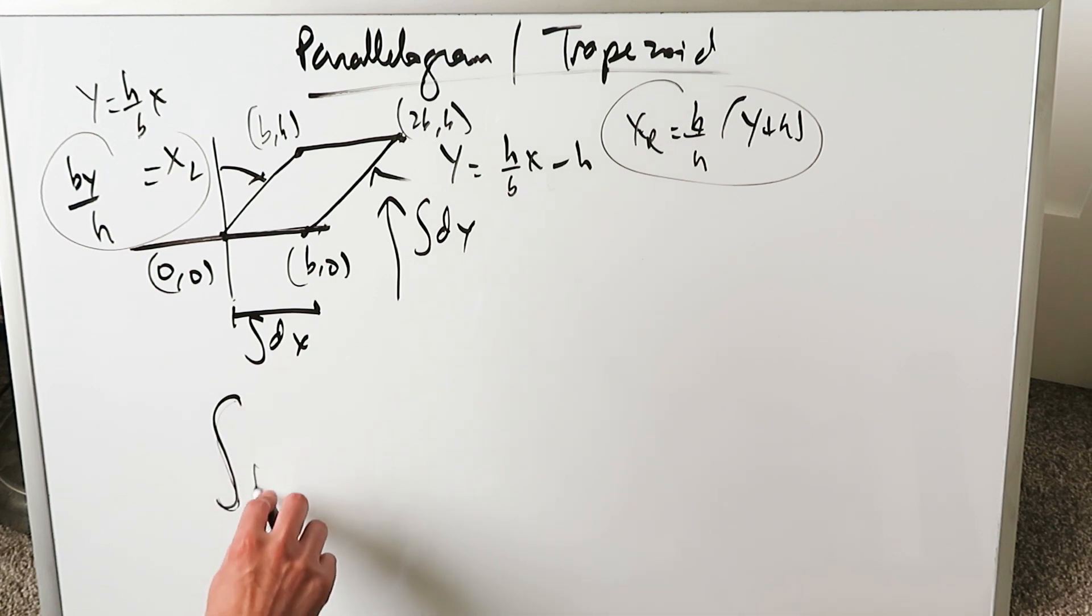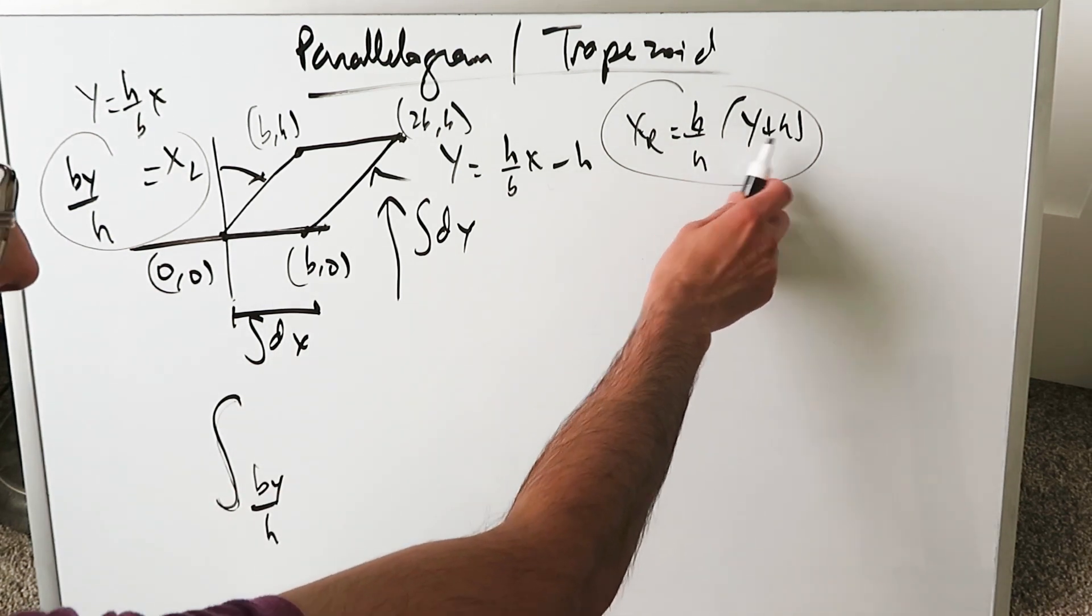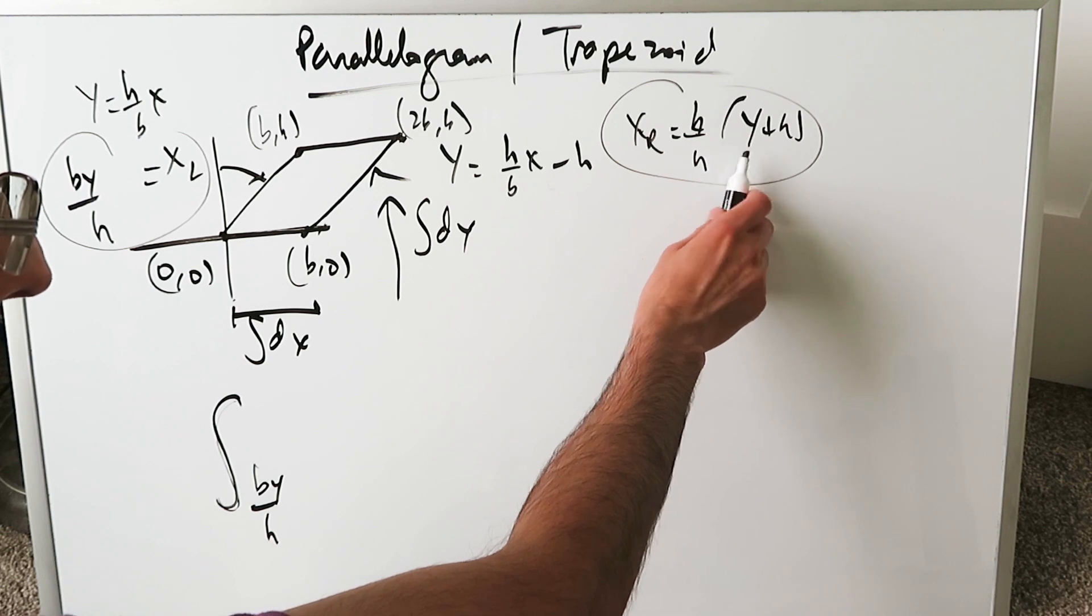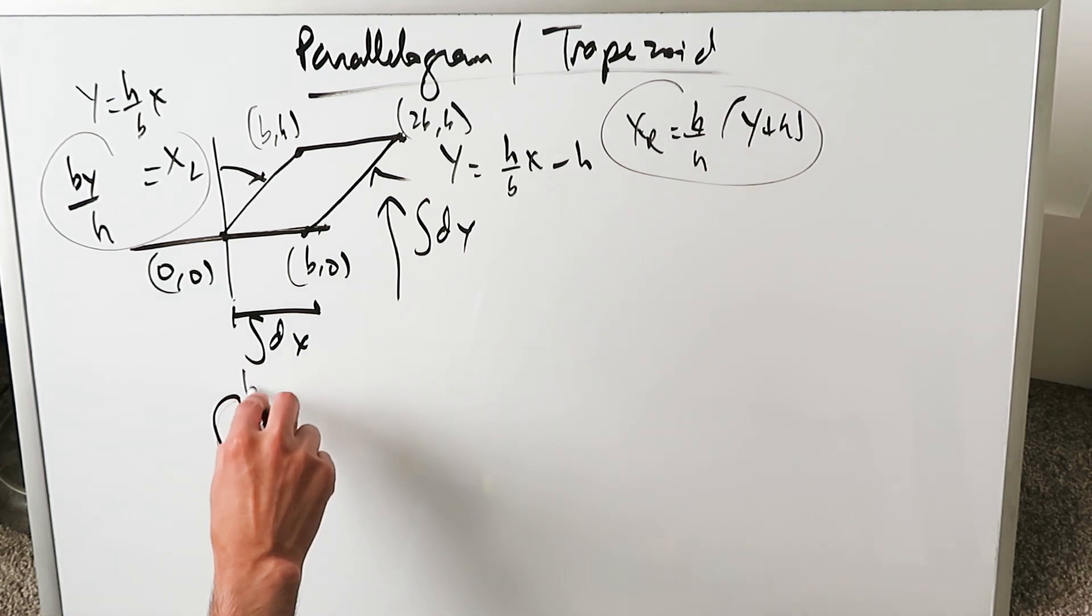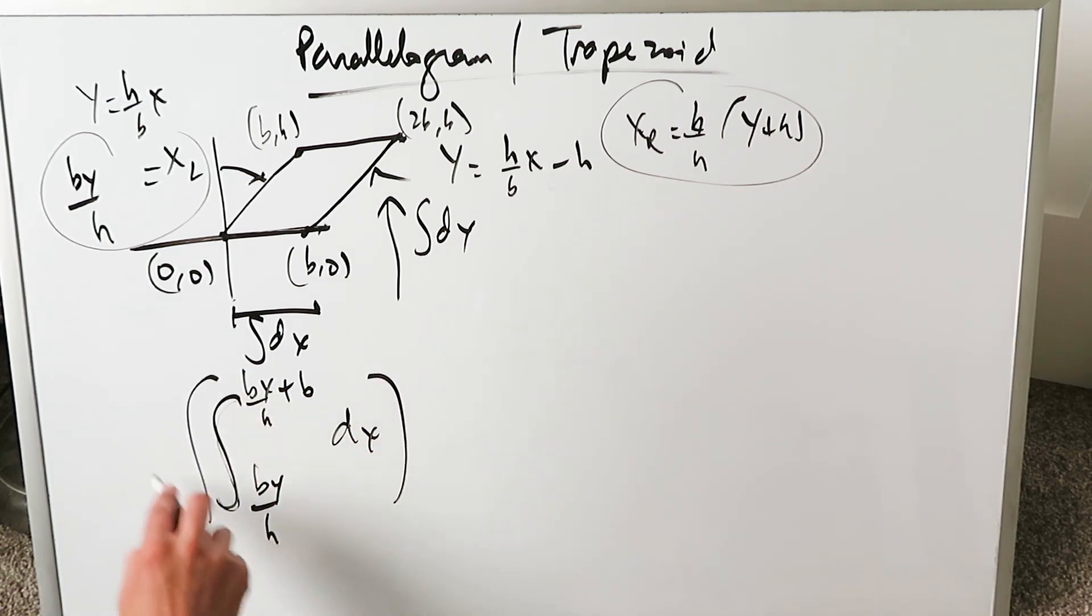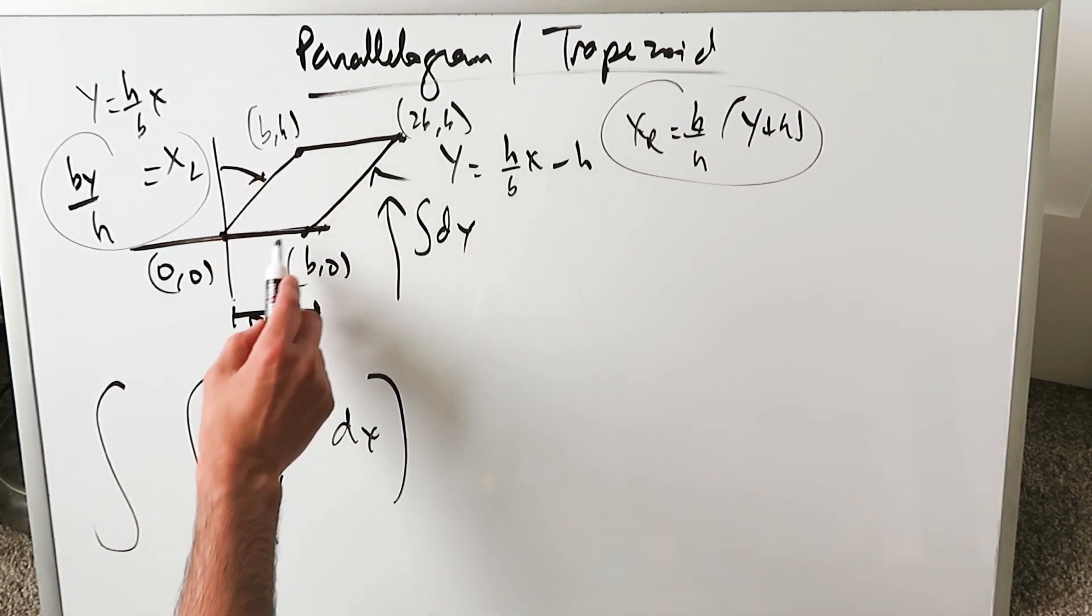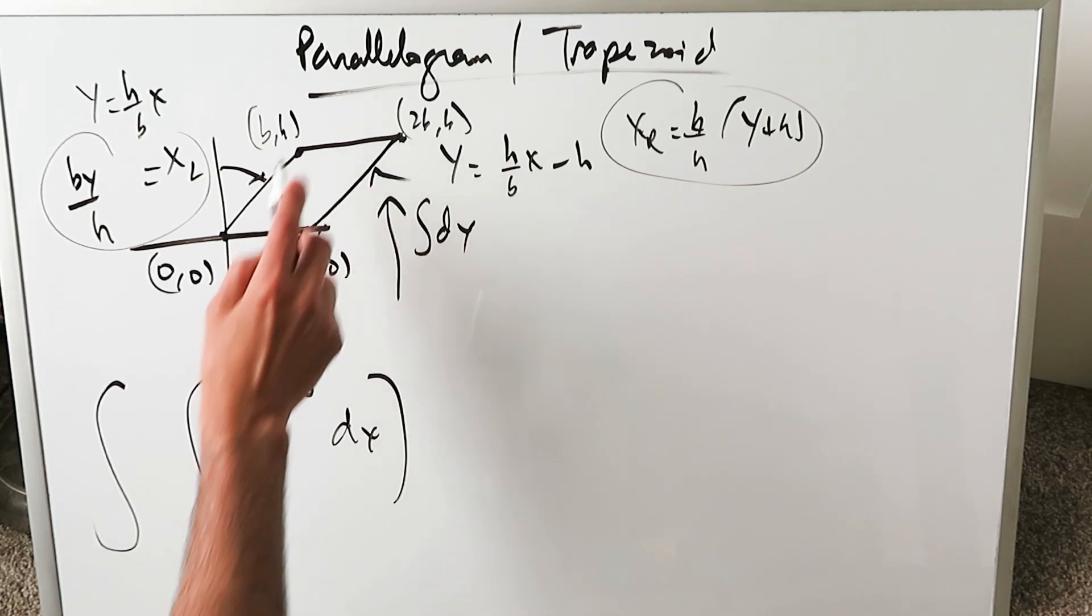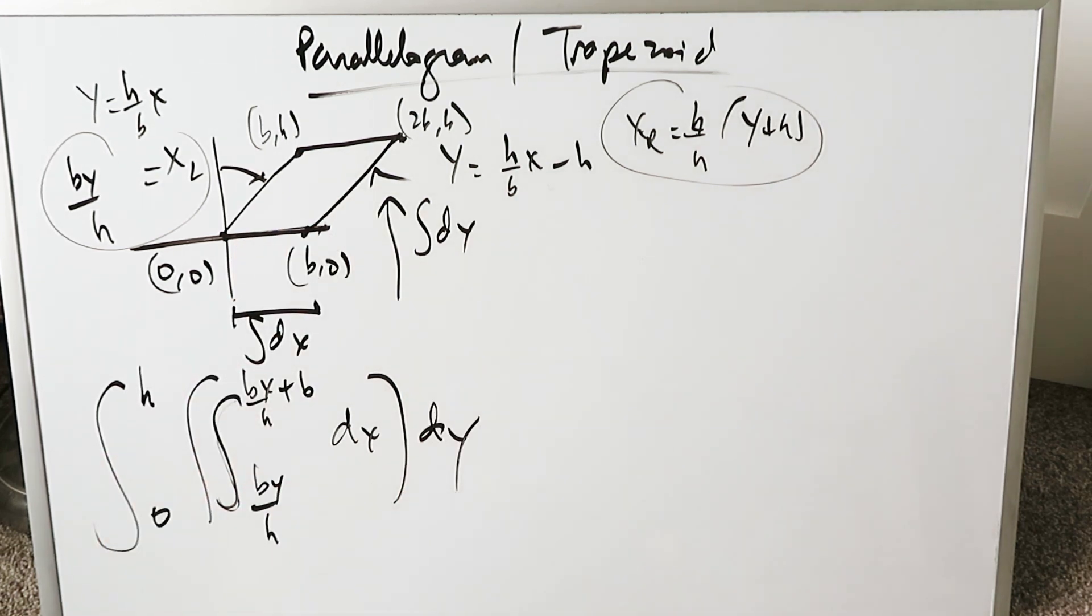Lower limit: by/h. Upper limit: (b/h)(y + h) = by/h + b. I've opened this up and distributed it. With regards to dx, all of this will integrate upwards from lower limit 0 to upper limit h with regards to dy.